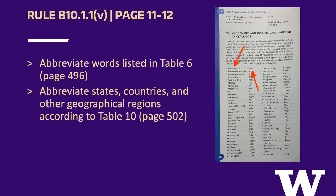Rule B10.1.1(V) states that case names should be abbreviated according to Tables 6 and 10. Table 6 provides abbreviations for common words found in the name of institutional authors. Some abbreviations in Table 6 represent multiple words. For example, the abbreviation ACAD. can represent either "academy" or "academic." Similarly, AUTO. can be used to represent "automobile" or "automotive." Table 10 provides abbreviations of geographical regions and covers abbreviations for cities, states, and countries.